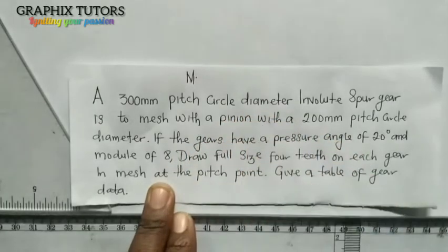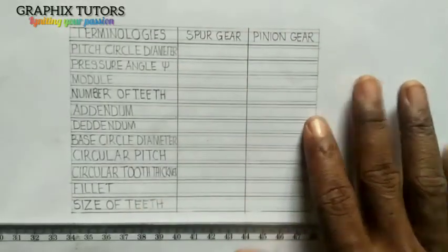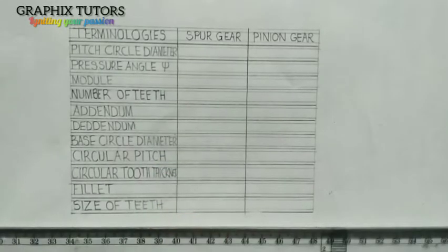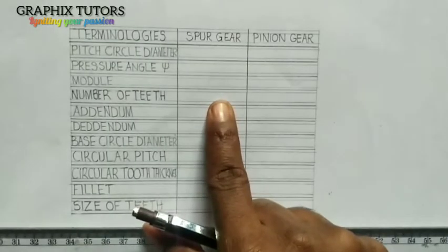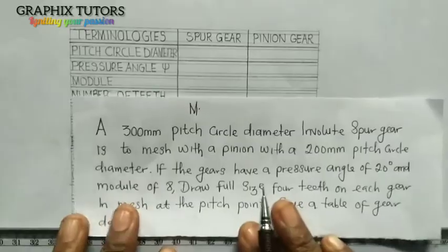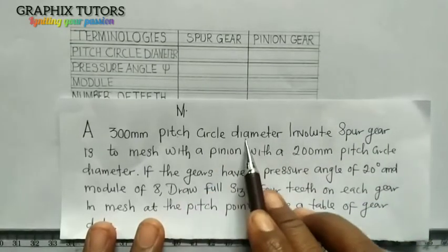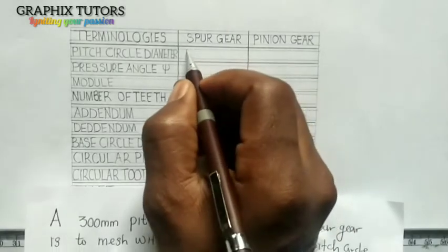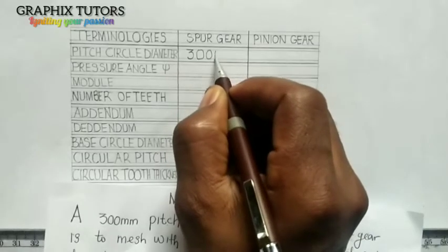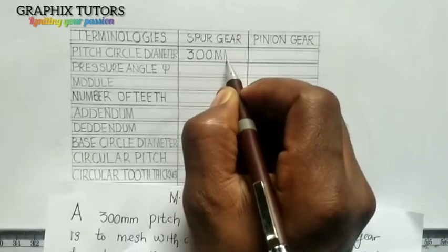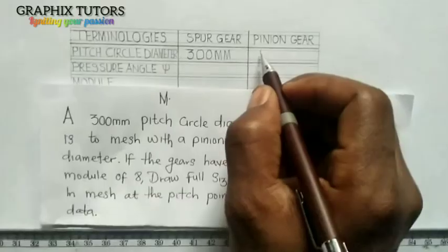The first thing we have to do is tabulate the data in a table. These are the terminologies used in gear drawing. We have two gears involved: a spur gear which is the bigger gear, and a pinion gear which is the smaller gear. The pitch circle diameter of the spur gear is 300mm, and the pinion gear is 200mm.